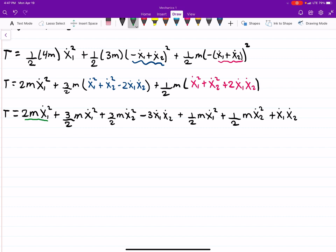And let's combine like terms. So I'm just going to say, well, I have this guy, and this guy, and this guy, that are all like terms. So let's see, 3 halves plus 1 half is 4 halves, so that's 2. 2 plus 2 is 4. That gives us 4m x1 dot squared.